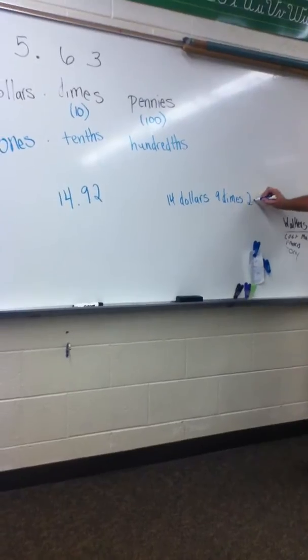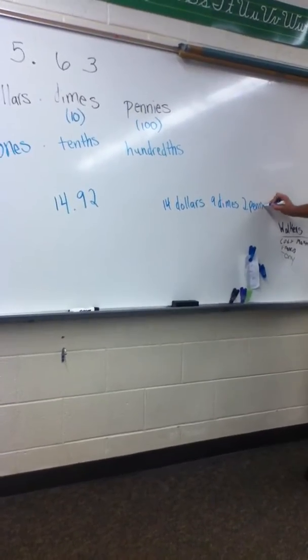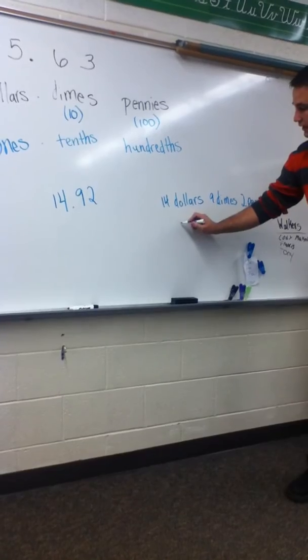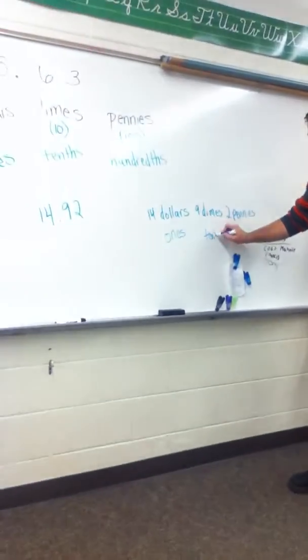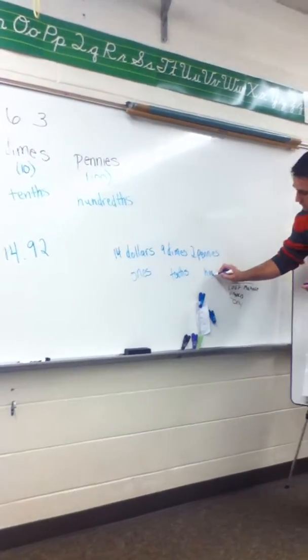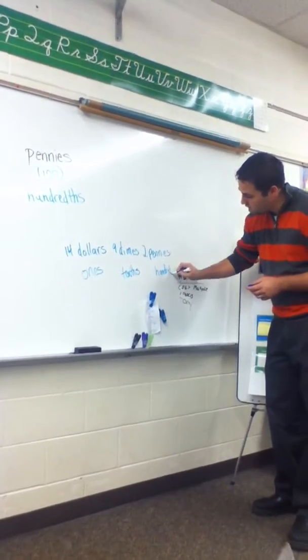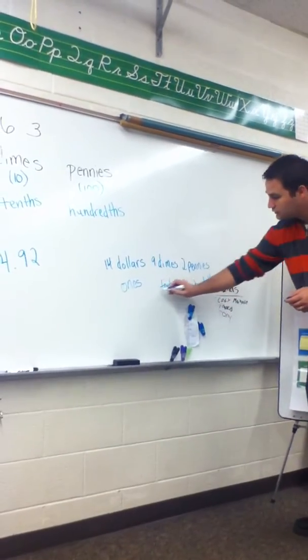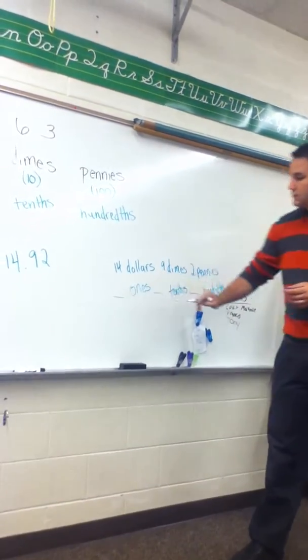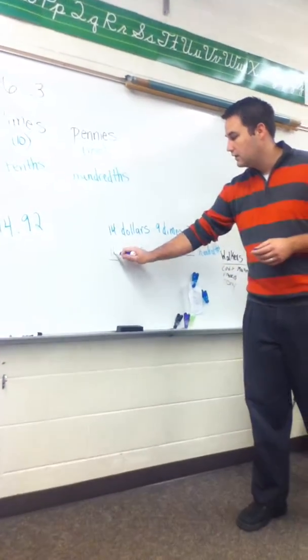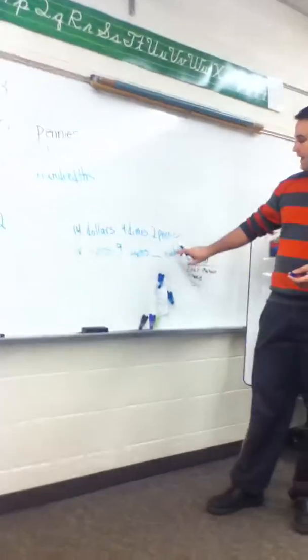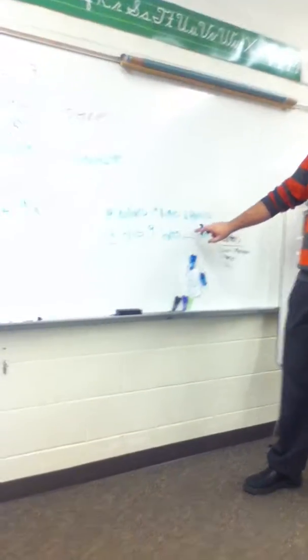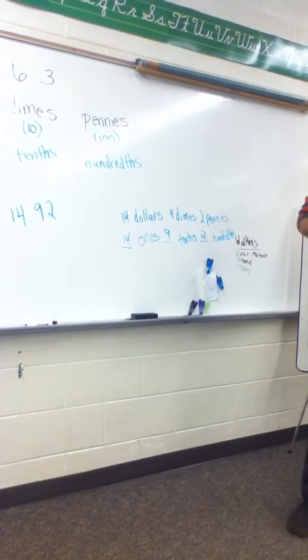Where's the pennies? Two. Let's see if you guys remember. How many ones? Fourteen. Tenths? Nine. Hundredths? Two. So, fill in these blanks. If I have fourteen dollars, how many ones do I have? Fourteen. Fourteen. If I have nine dimes, how many tenths do I have? Nine. And if I have two pennies, I also have? Two. Two hundredths.